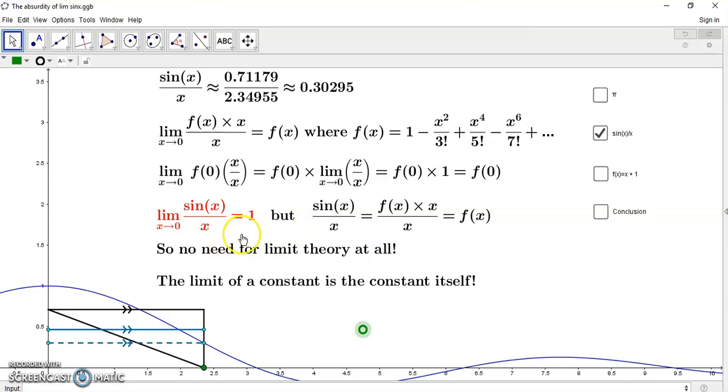So we can rewrite this little limit here as f of 0 times x over x and then take the f of 0 out because it doesn't care about the limit. So this particular limit here is just a load of baloney and something that mainstream academics have never really understood. But sin x over x is just the same as this irreducible function.